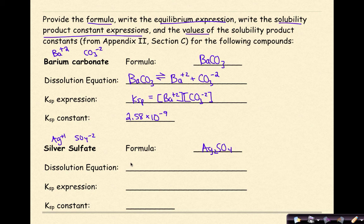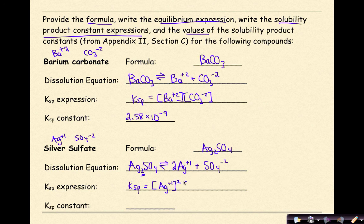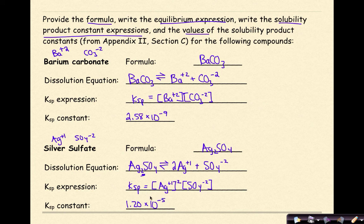The dissolution equation is: Ag2SO4 with a double arrow, then 2Ag⁺¹ plus SO4²⁻, since there is a subscripted 2. The KSP expression does not include the solute because it is a solid. So KSP equals the concentration of Ag⁺¹ raised to the second power times the concentration of SO4²⁻. The KSP constant from the textbook is 1.20 times 10 to the negative 5.